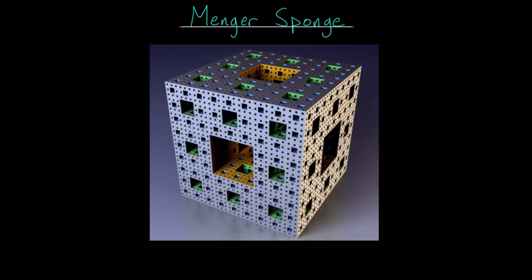If we look at the fractal dimension of this shape, the dimension D is approximately 2.73. For the volume, surface area and this dimension, we will look at those topics in a future video.